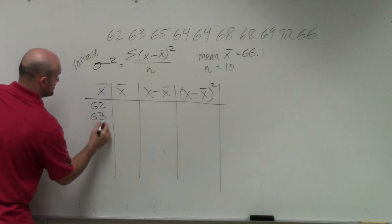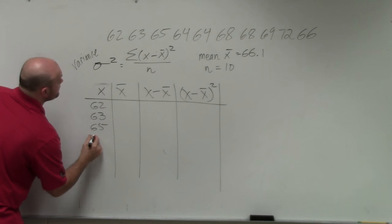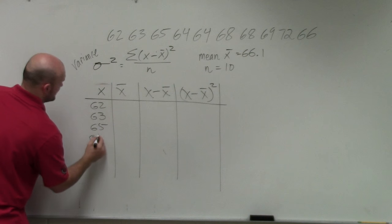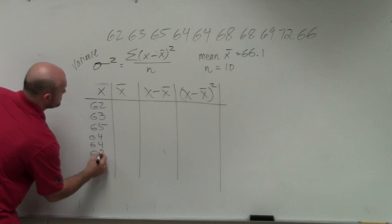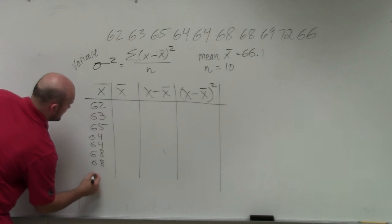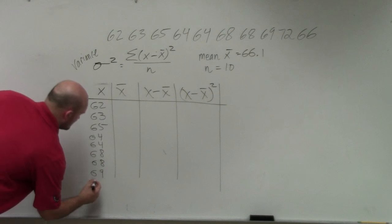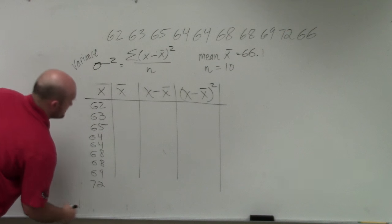So let's do that for all of the values. 62, 63, 65, 65, doesn't matter if they're in order. 64, 64, 68, 68, 69, 72, and 66.